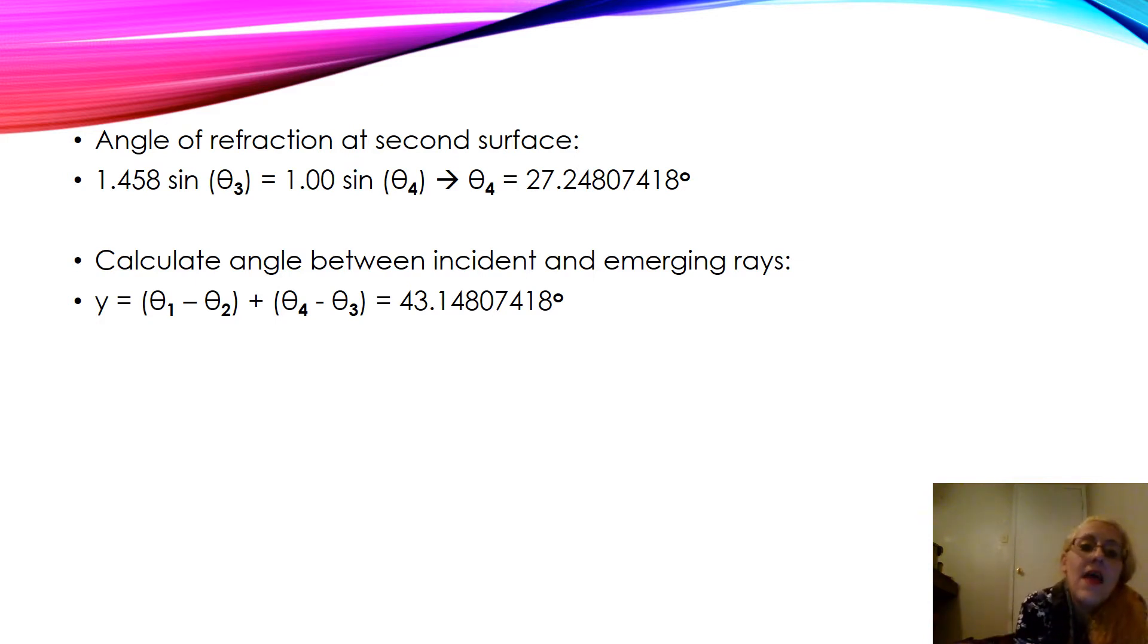Now calculate the angle between incident and emerging rays, which is represented by y. Theta 1 minus theta 2 plus theta 4 minus theta 3 equals 43.14807418 degrees.